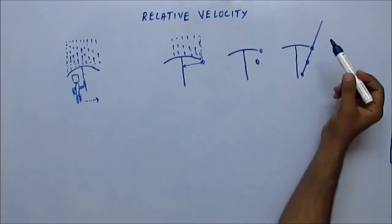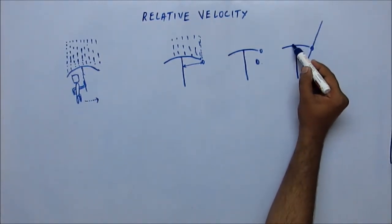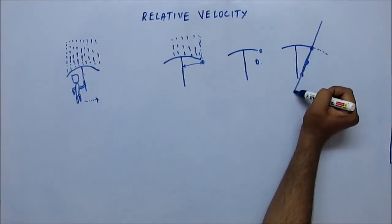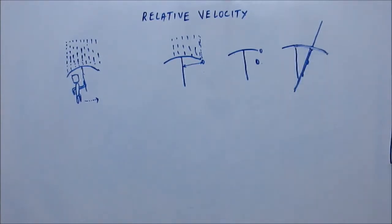In the same way, Tom would think that Tom is stationary and the rain droplet is coming obliquely. So now for him to be safeguarded from this rain droplet, he has to rotate his umbrella a little and put it like this. That's the reason why rain droplets, although coming vertically downward, will appear to be coming obliquely.